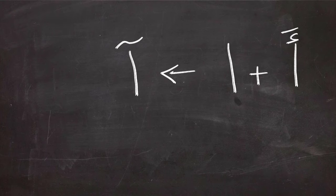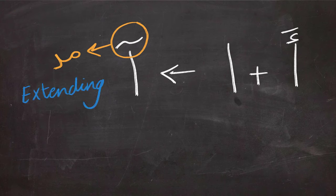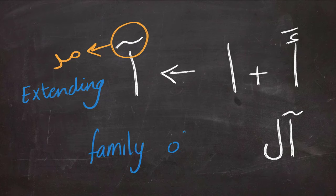Next, if you add alif that has fatha on top and another alif, you will end up with this sign on top of alif called med, which means extending. So you're going to pronounce alif but a little bit longer than usual. In this example, al means family of. So the med is a combination of two alifs.